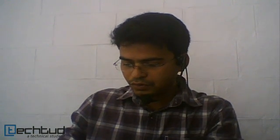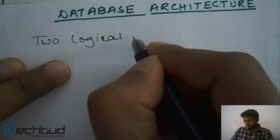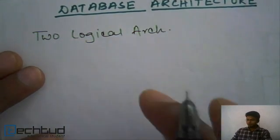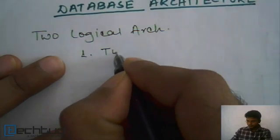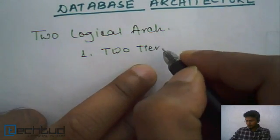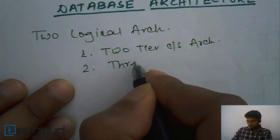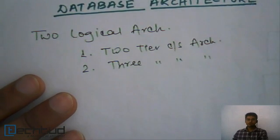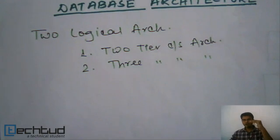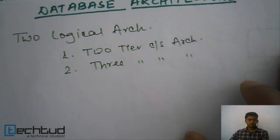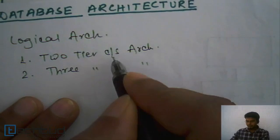There are two logical divisions of database architecture: two-tier client-server architecture and three-tier client-server architecture. A tier is basically a level of division — how many levels we divide the entire architecture is termed as tier. In two-tier we divide into two levels of organization, and in three-tier we divide into three levels of organization.